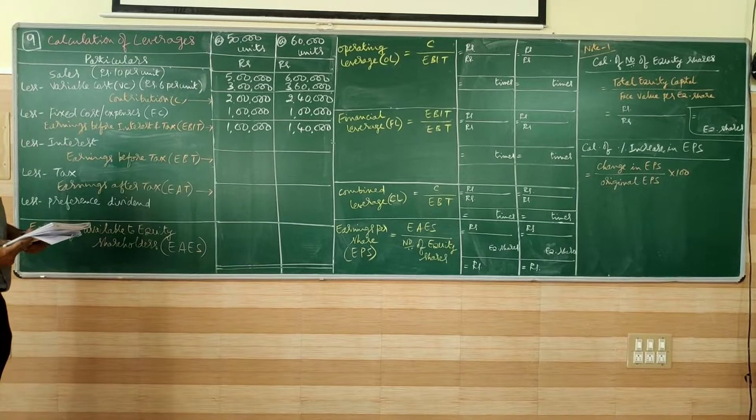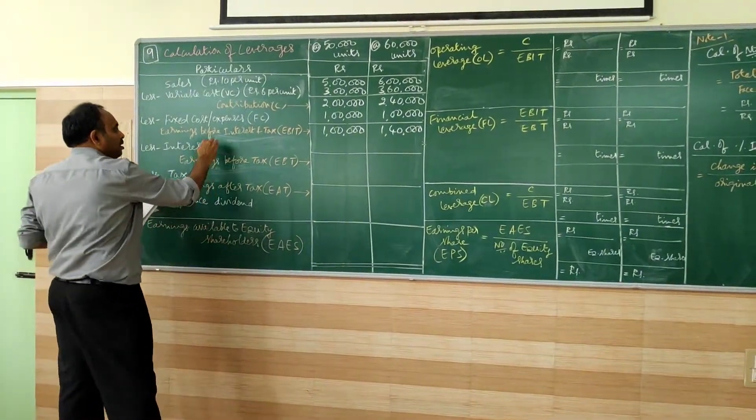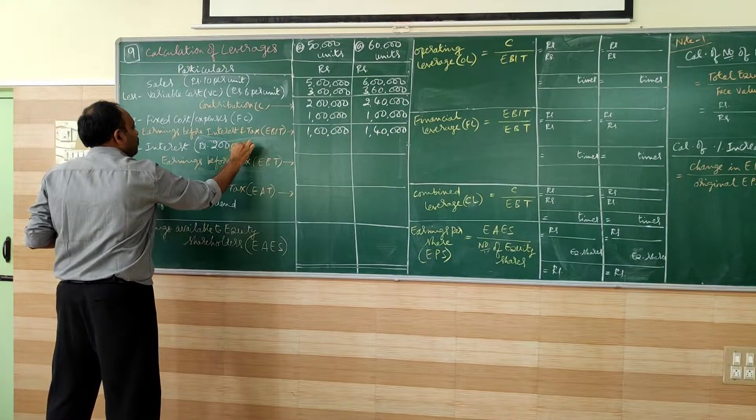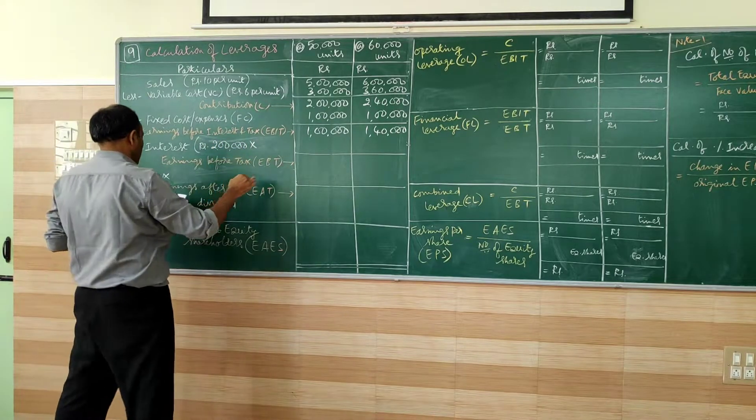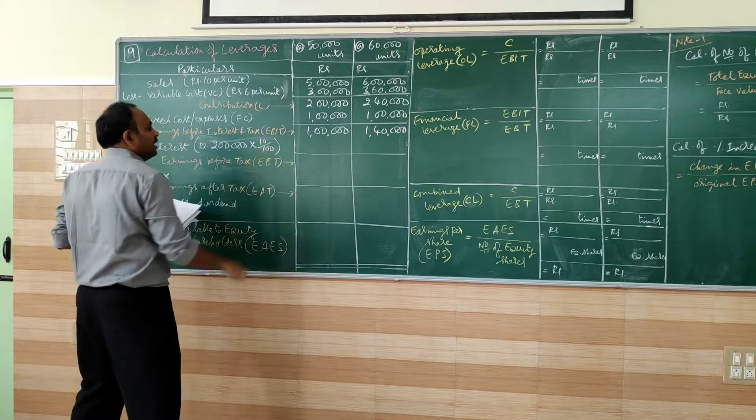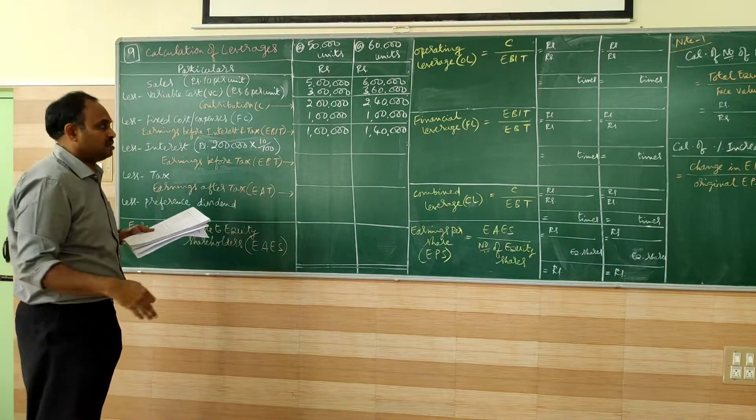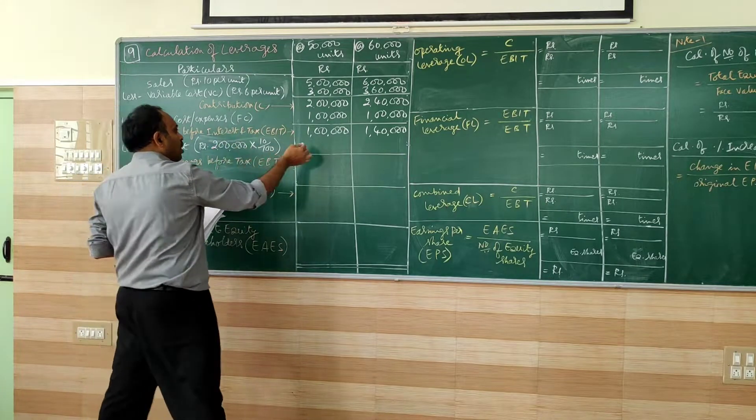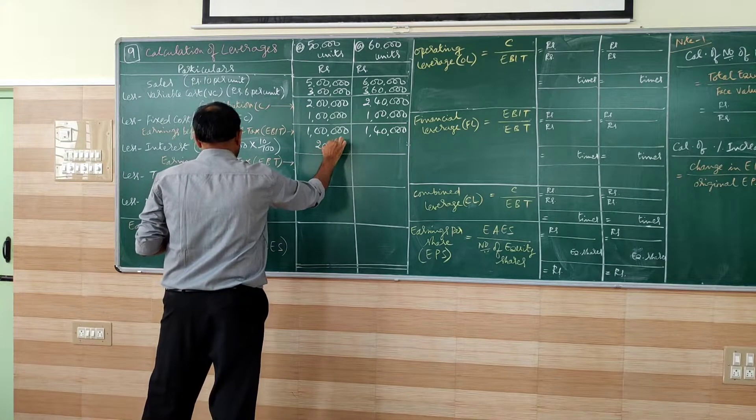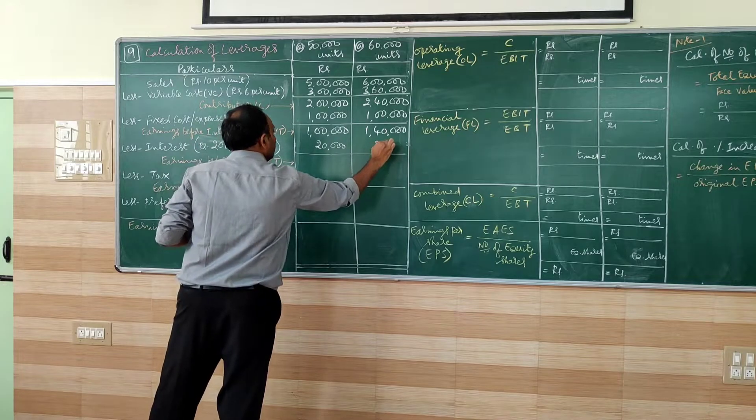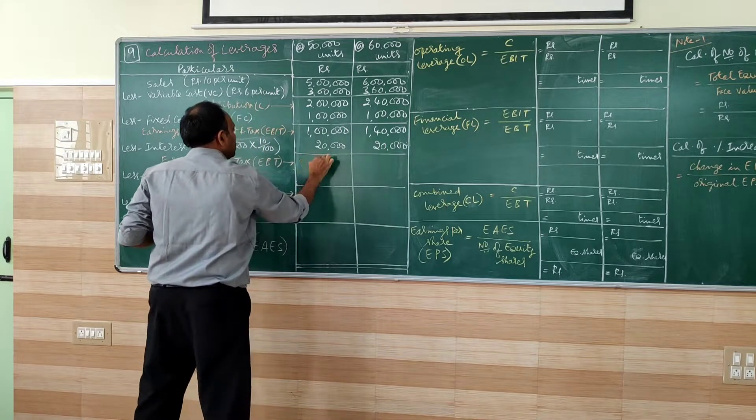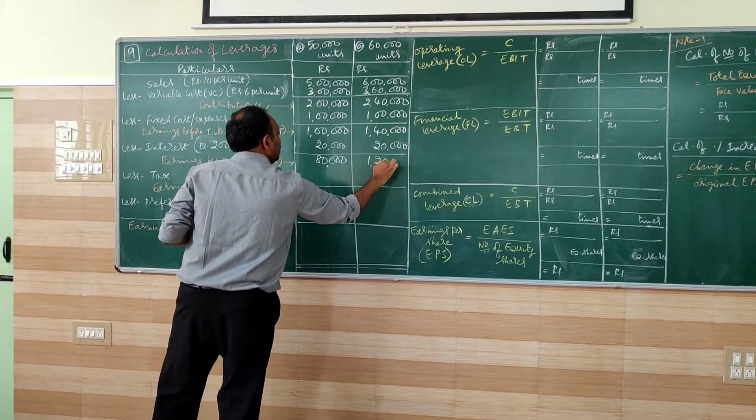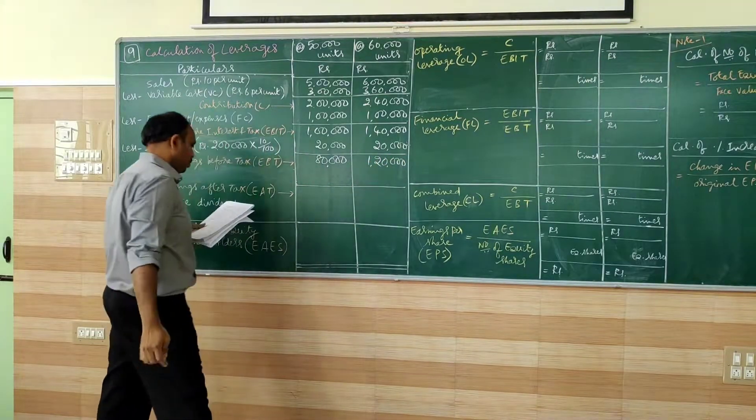Then is interest part. Interest part we have to allocate because debt is given, debt of rupees 2 lakhs at 10%. 10% debt of rupees 2 lakhs, 10% is the interest rate, the loan is 2 lakhs. On that we allocate interest as 20,000. So EBT is 80,000 and 1 lakh 20,000.